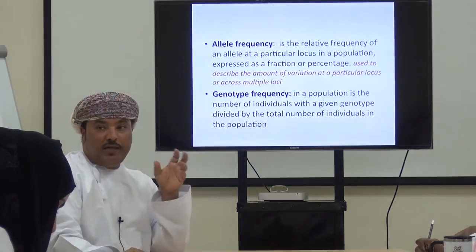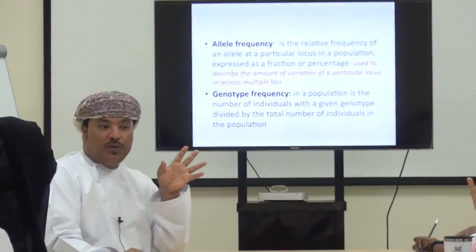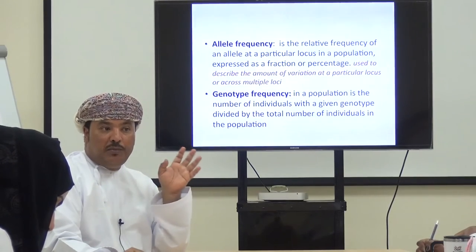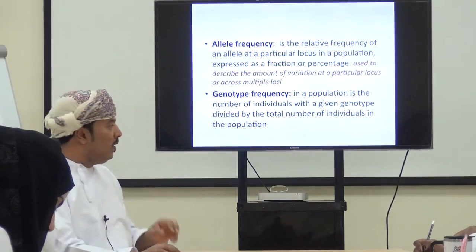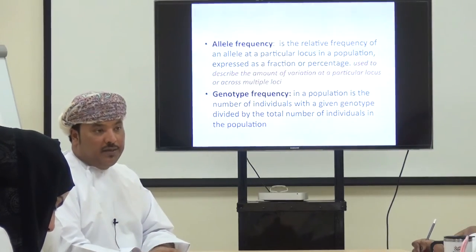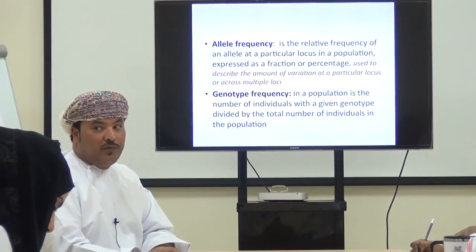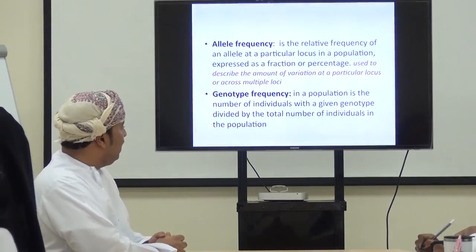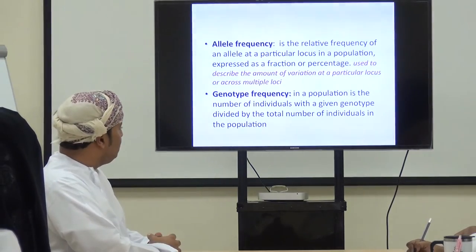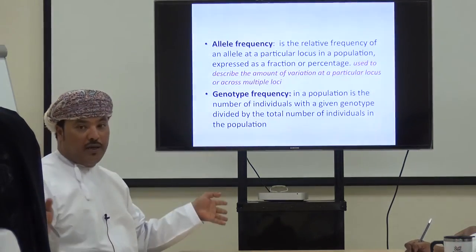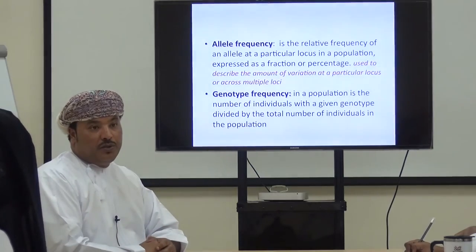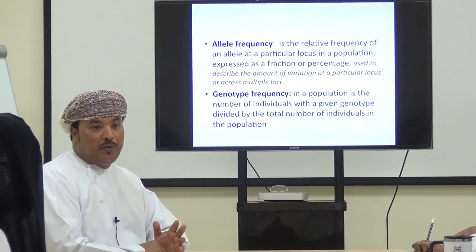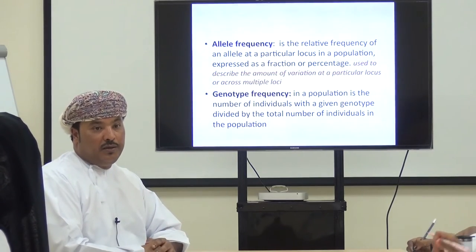The Hardy-Weinberg principle states that allele and genotype frequencies in a certain population will remain constant from generation to generation in the absence of other evolutionary influences — such as selection, mutation, genetic drift, or gene flow. If these factors are absent, the frequency remains the same from generation to generation. This is the assumption on which the equilibrium is built, and it helps us predict allele and genotype frequencies from one generation to the next.